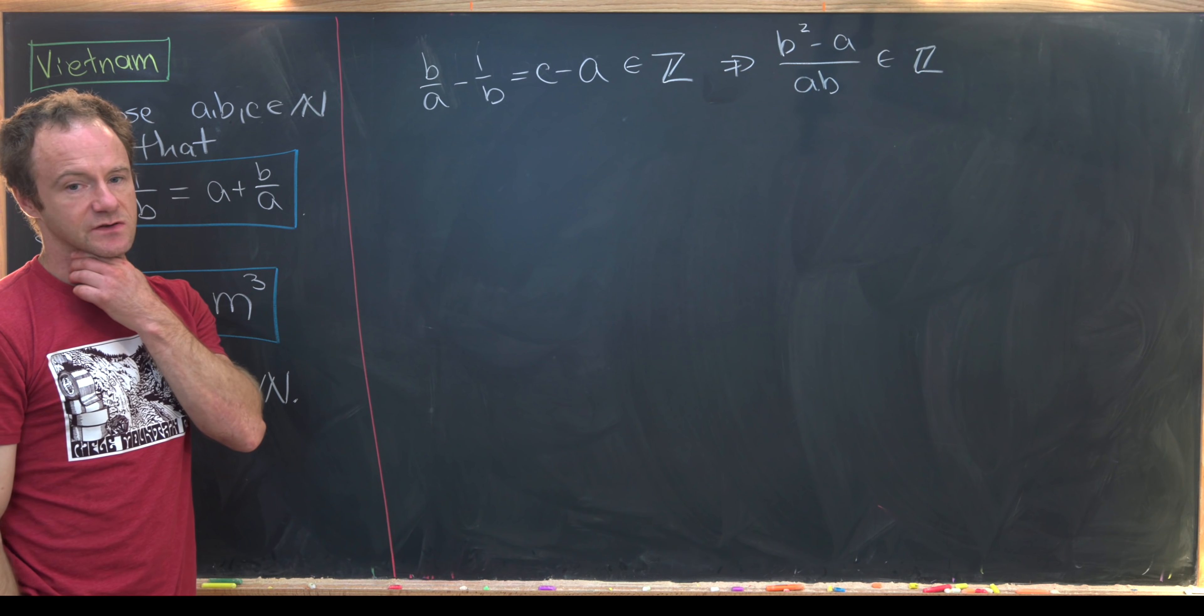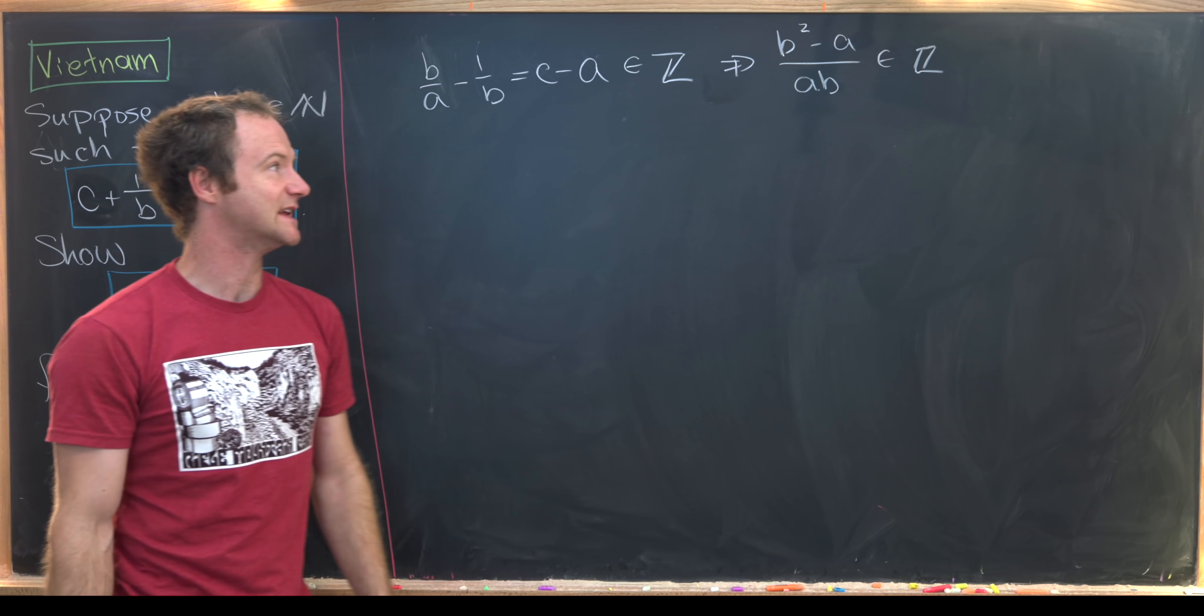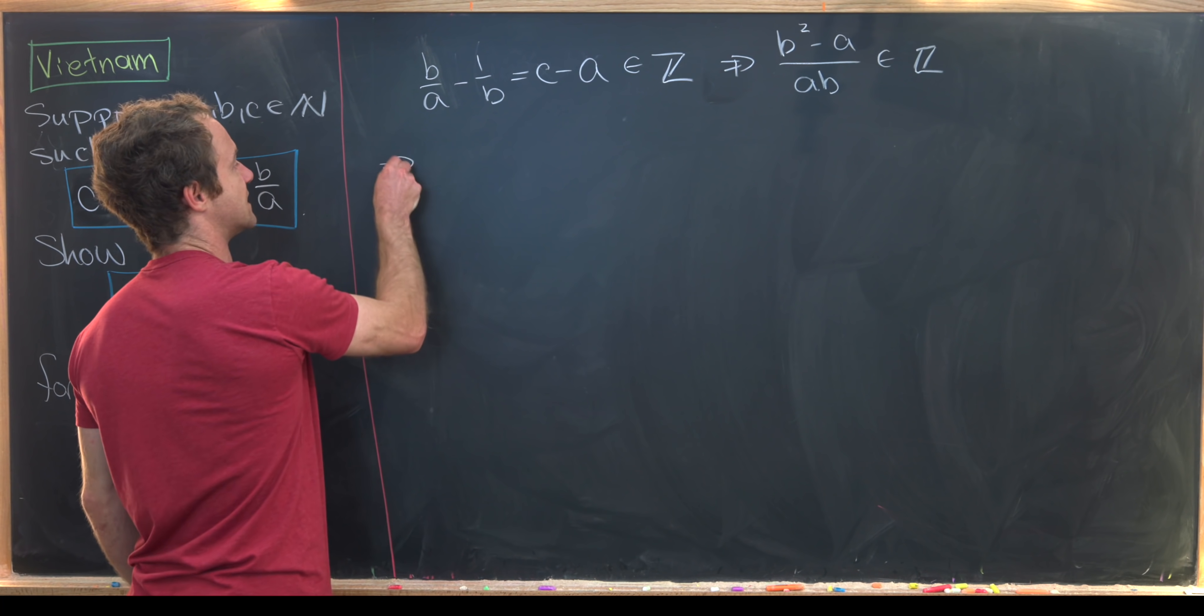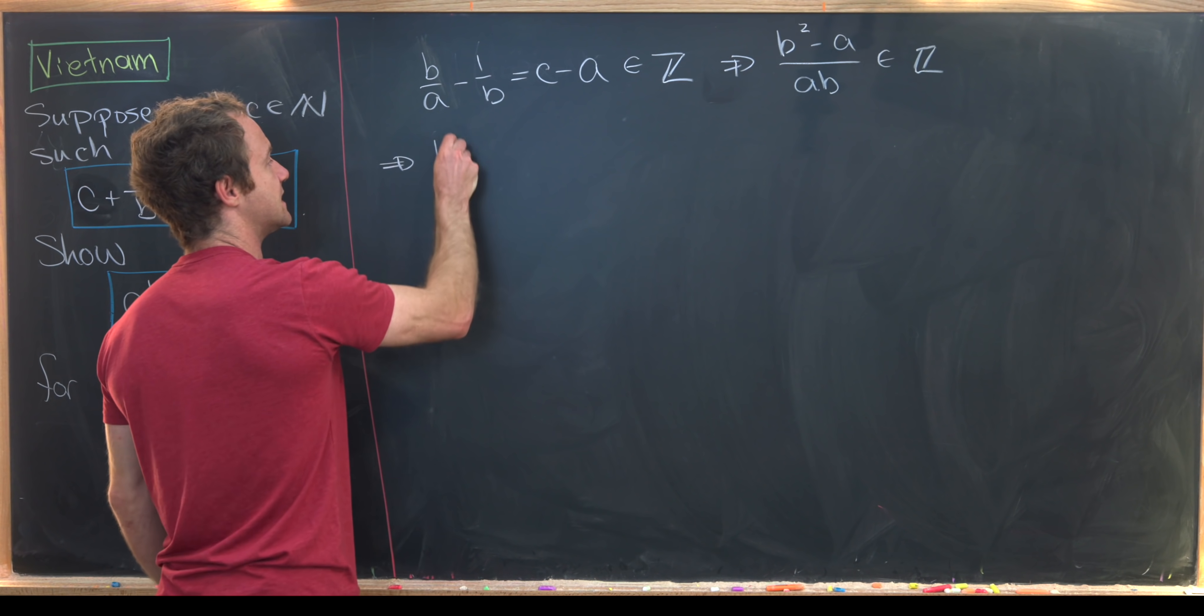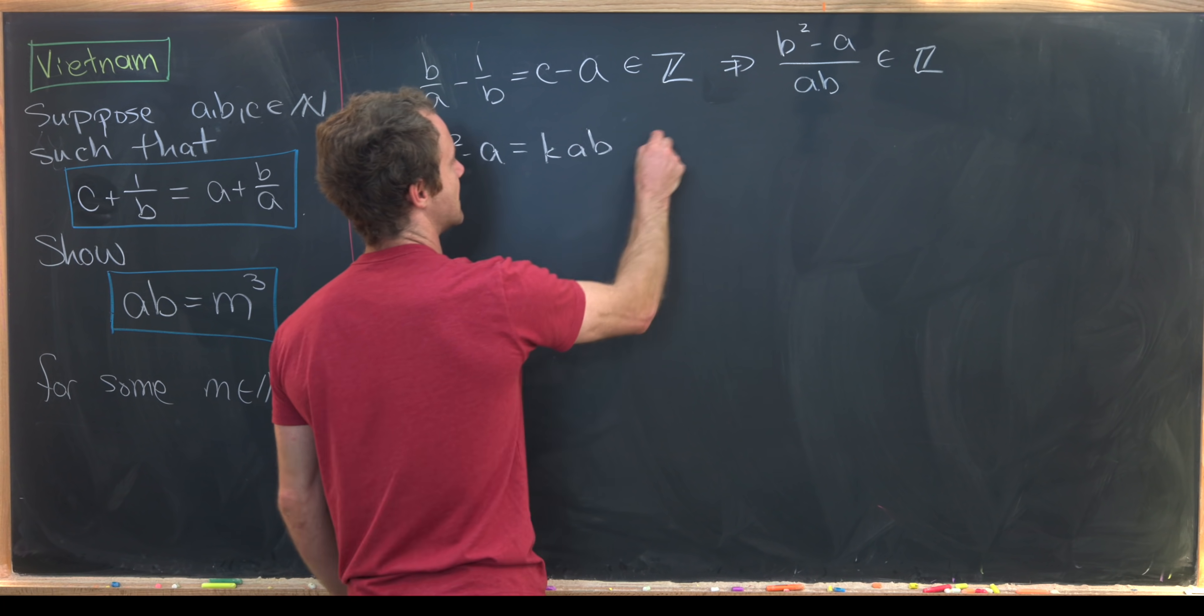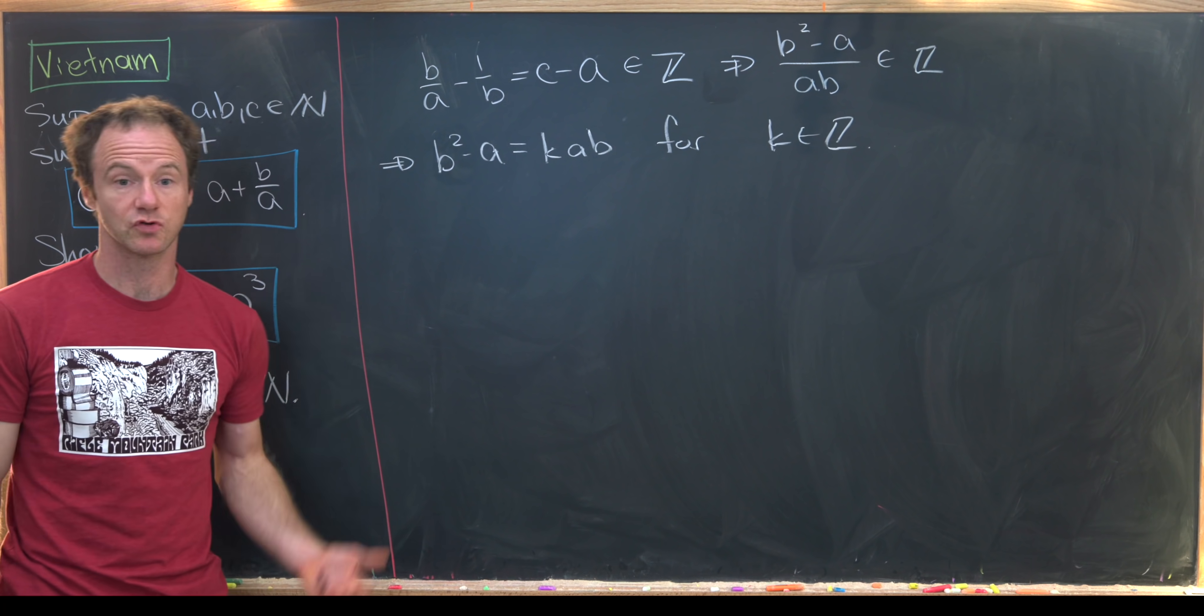Okay, so let's see what we can do from there. Well, the fact that this is an integer means the numerator is a multiple of the denominator. So that means we can write B squared minus A as K times AB for some integer K. Great.